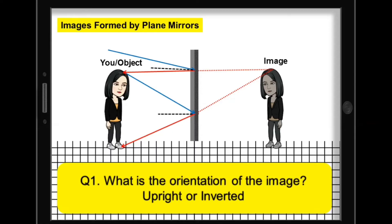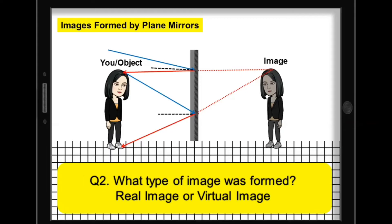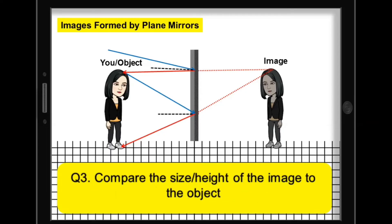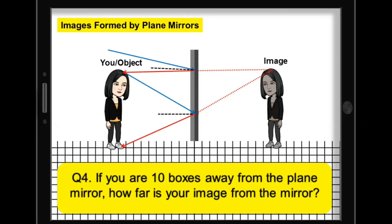Question number one: What is the orientation of the image — upright or inverted? Question number two: What type of image was formed — real image or virtual image? Question number three: Compare the size or height of the image to the object. Is it reduced, enlarged, or the same? And question number four: If you are 10 boxes away from the plane mirror, how far is your image from the mirror? Use the unit boxes to describe the distance of your image from the plane mirror.